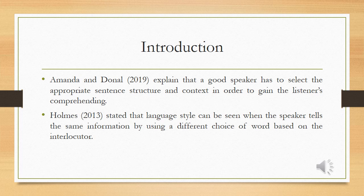Normally, in comprehending the meaning of speech, the speaker has to deliver it properly by considering the structure of language, choice of words, intonation, etc., to avoid misunderstanding. Related to Amanda and Donald 2019, a good speaker has to select the appropriate sentence structure and context in order to gain the listener's comprehension. In order to achieve it, the speaker has to consider the interlocutor's position. Because of this reason, the speaker must choose an appropriate language style for different interlocutors to avoid social consequences.